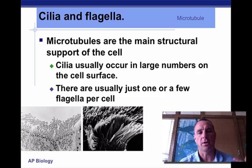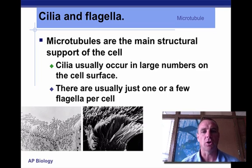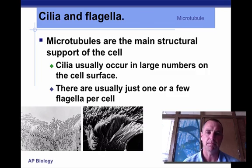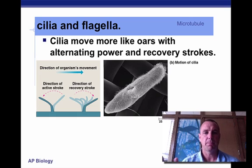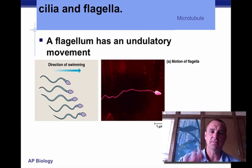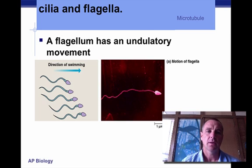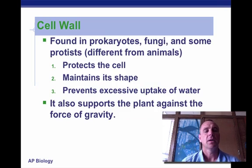Now, cilia and flagella both deal with microtubules for structural support. Cilia are found in large numbers on a cell, whereas flagella is a single structure. Another difference: cilia tend to move back and forth like an oar, whereas flagella do an undulating movement up and down.